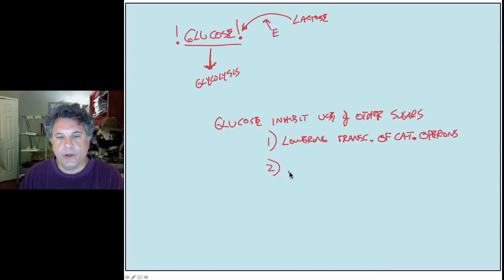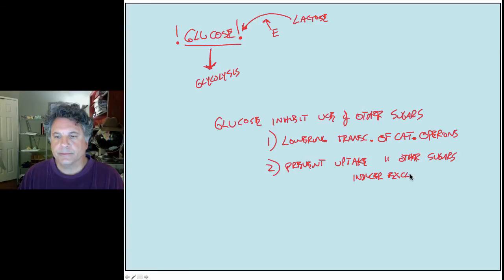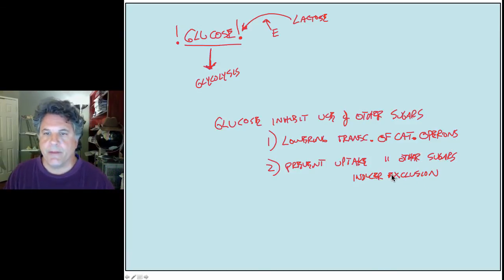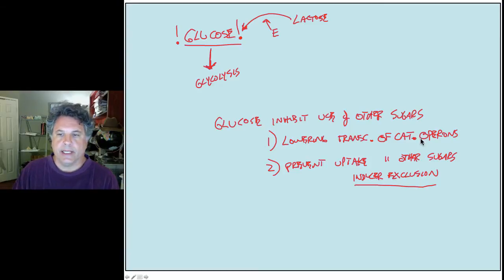Glucose inhibits the use of other sugars in two ways: first, by lowering transcription of catabolic operons; and second, it will prevent the uptake by the cell of other sugars. For example, lactose is an inducer of the lactose operon, but when glucose is present at high enough levels, glucose will block the uptake of lactose. This is called inducer exclusion.